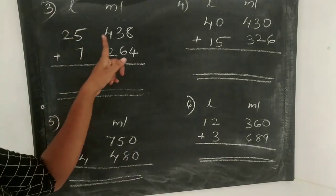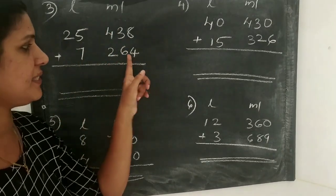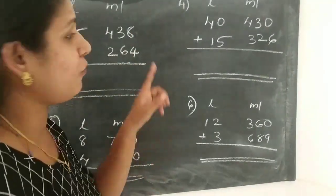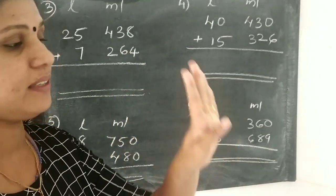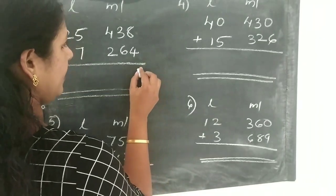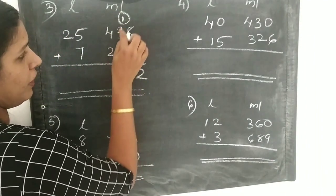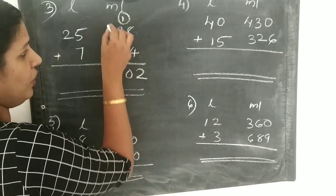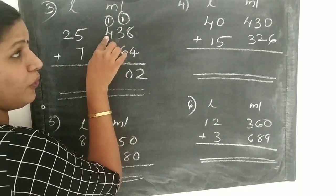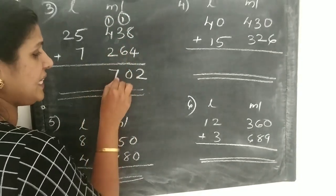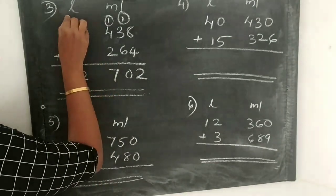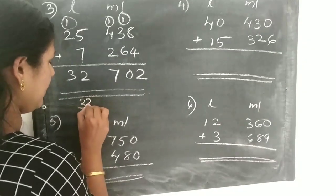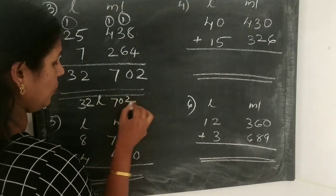Problem 3: 25 litres 438 millilitres plus 7 litres 264 millilitres. Starting from the right: 8 plus 4 is 12 — write 2 carry 1. Then 1 plus 3 is 4, 4 plus 6 is 10 — write 0 carry 1. Then 1 plus 4 is 5, 5 plus 2 is 7. For litres: 5 plus 7 is 12 — write 2 carry 1. Then 1 plus 2 is 3. Answer: 32 litres 702 millilitres.